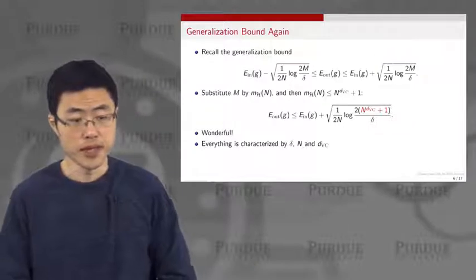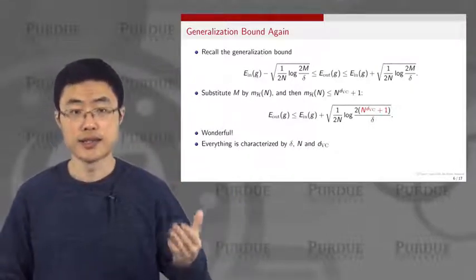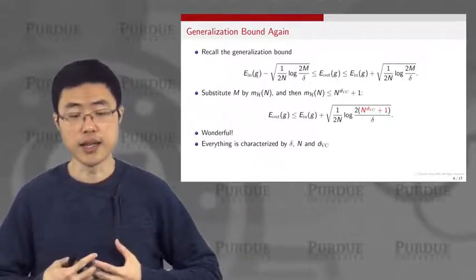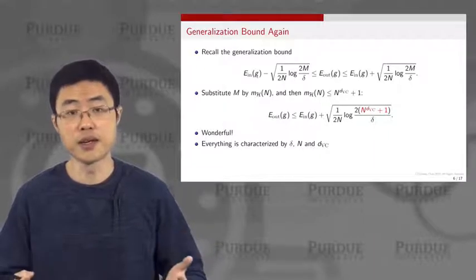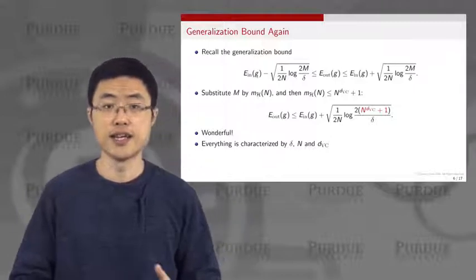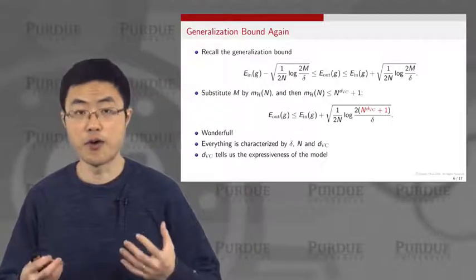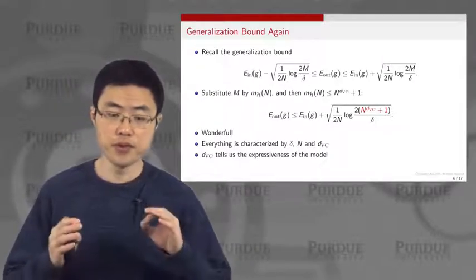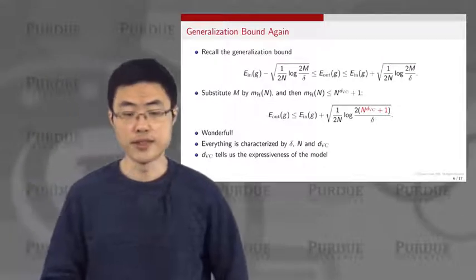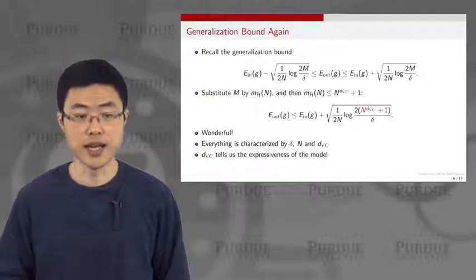Everything is characterized by the quantity delta, your confidence level. You tell me how much confidence you want, and then I can tell you the minimum number of training samples you need given your hypothesis set. VC dimension tells us the expressiveness of our model, and this equation lets us determine the number of training samples required to achieve the desired confidence level.